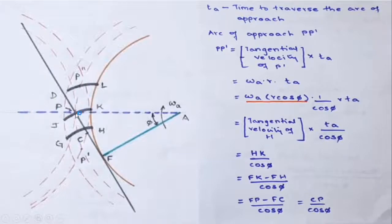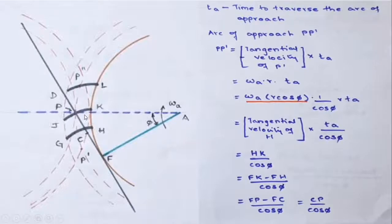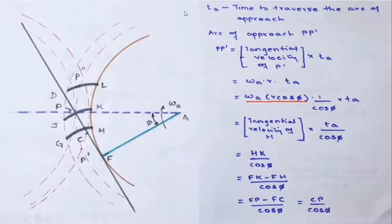In this figure, the beginning of engagement of the driving involute is shown as gh. This gh is the involute gear — this is the beginning of engagement. When the point of contact is at p, it is shown as jk, and when the end of engagement occurs, the driving involute is shown as dl. The arc of contact is p-dash to p-double-dash, consisting of the arc of approach p-dash to p, and p to p-double-dash on the pitch circle.